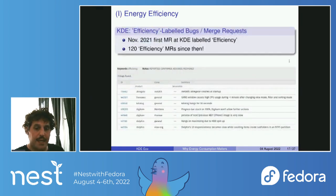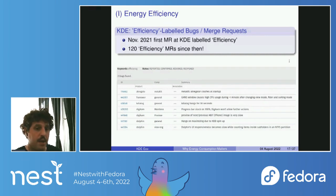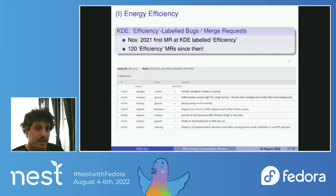At KDE, we've started labeling merge requests and bugs with an efficiency tag. This screenshot shows bug reports labeled efficiency, including things like high CPU usage, software freezes or hangs, and slowdowns — all contributing to higher energy consumption. Our first efficiency-labeled merge request was in November 2021. We've had 120 efficiency merge requests since then, and we want to encourage other free software communities to do something similar.